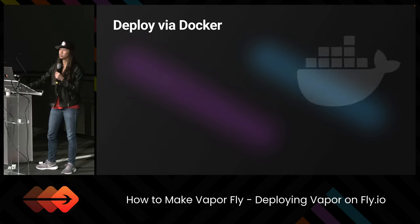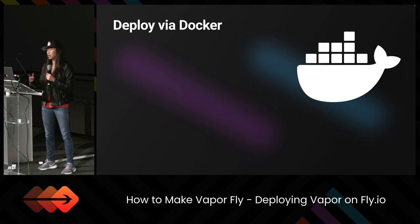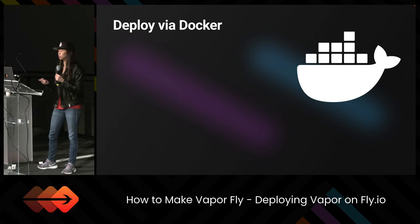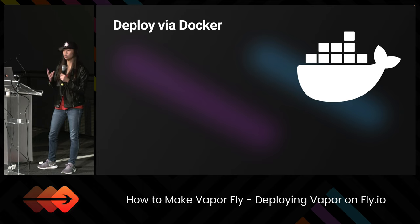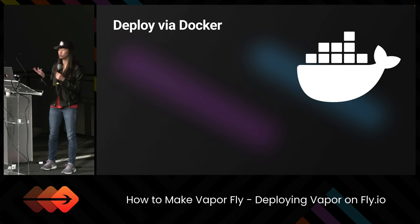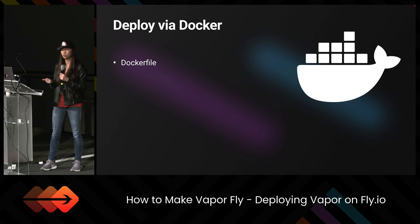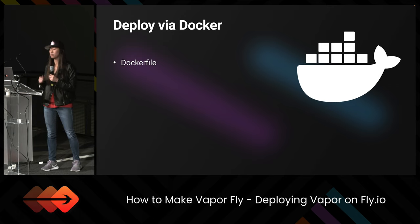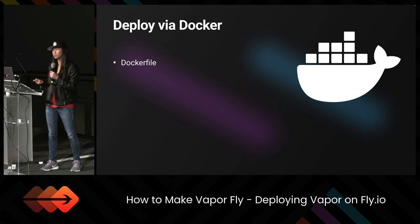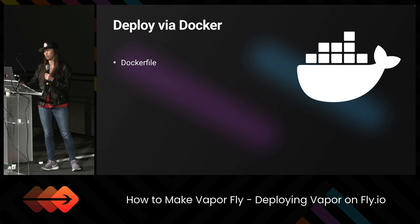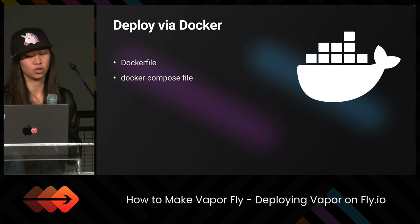So let's talk about Docker. Docker is a platform designed to help developers build, share, and run modern applications. We package up everything we need to create our app and then we can put it anywhere to run it. There are two important files Docker uses. First is just the Dockerfile — a single text file with no file extension — used to build the image of your Dockerized app, including your app's executable and any dependencies.